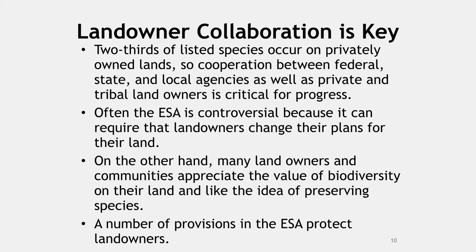A number of provisions protect landowners as incentives to participate in developing habitat conservation plans. Permits can be issued to protect landowners from liability if a listed species is accidentally harmed during normal land use activities. In a candidate conservation agreement, the Fish and Wildlife Service helps landowners reduce threats to a species in an effort to avoid listing it at all. A safe harbor agreement is a promise that if landowners voluntarily implement conservation measures, the Fish and Wildlife Service will not require additional actions that could limit future management options.